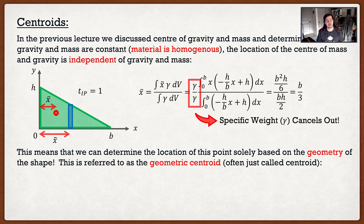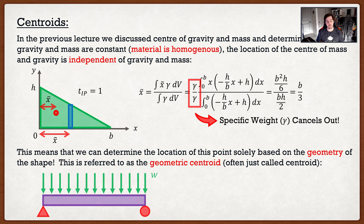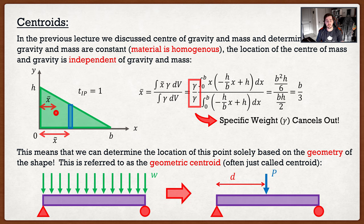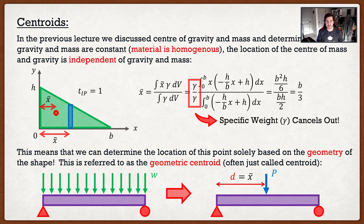We've actually done this many times before. Remember distributed loads on beams — we converted a distributed load to an equivalent point load acting at distance d. For a rectangular load, d is just the halfway point of the rectangle. We didn't need to know the density; we just needed the geometry. That distance d was actually the x-component of the centroid. I love topics that relate to things we've already done because it makes it easier to visualize.